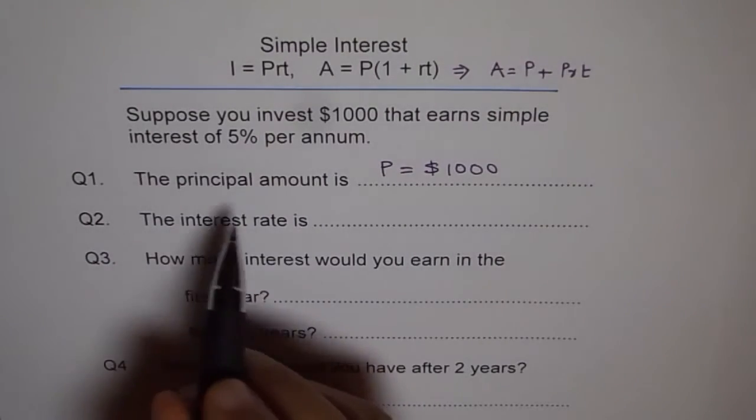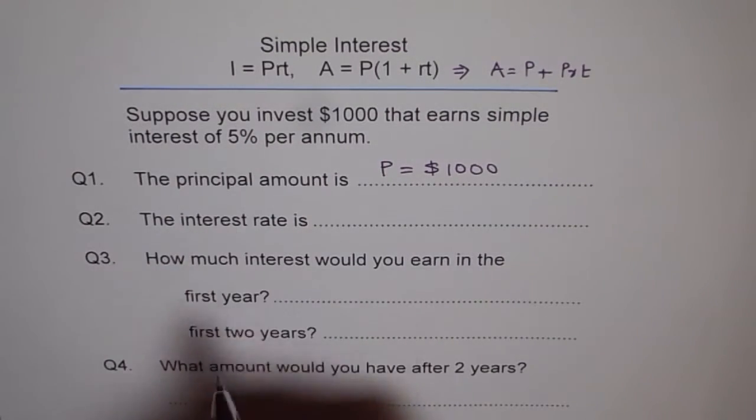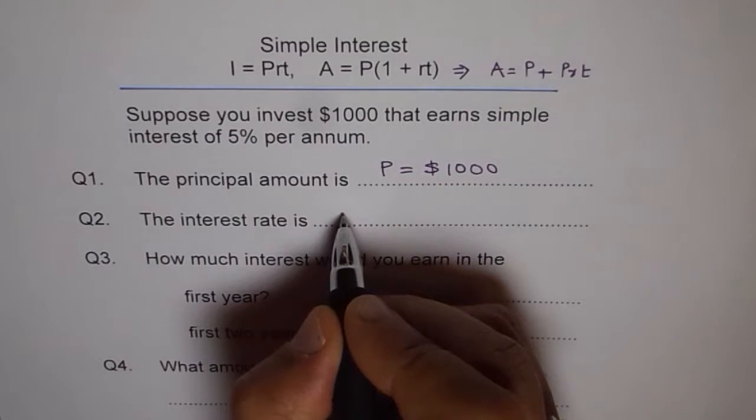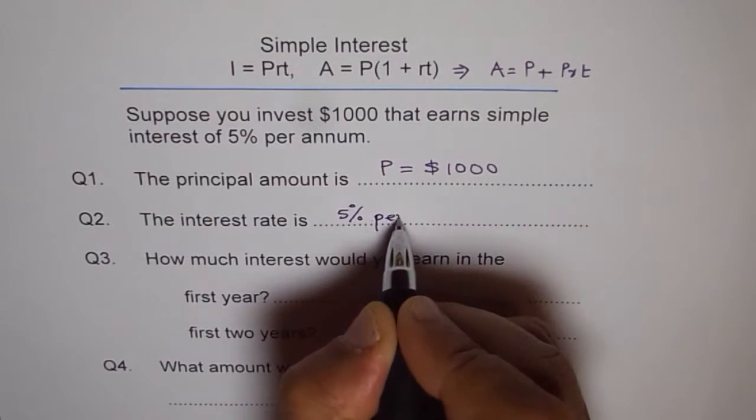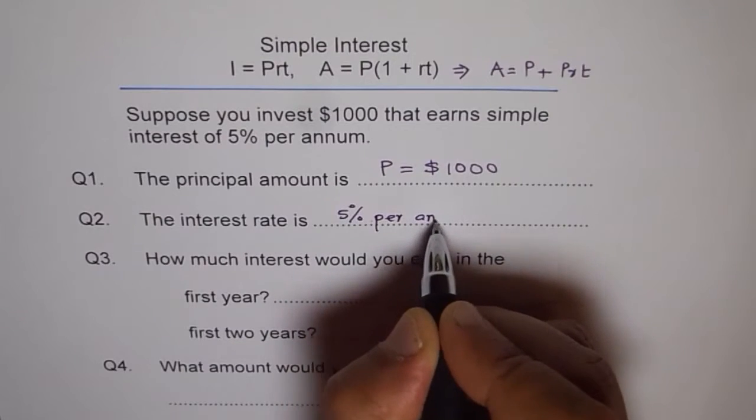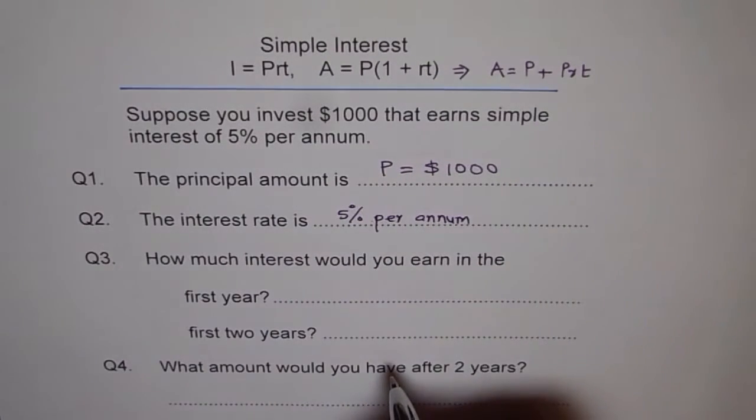The interest rate is 5% per annum, that is our interest rate. Now when we say 5%, I can write 5% per annum, that means per year. Here you have to be careful. Sometimes they say interest will be paid only at the end of the year.